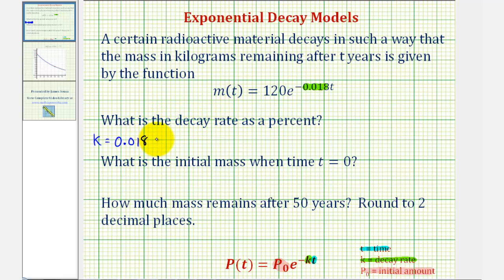Or just move the decimal point to the right two places and add a percent sign. This would be 1.8 percent. So we can say the decay rate is 1.8 percent per year.